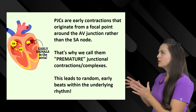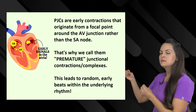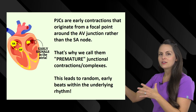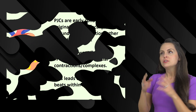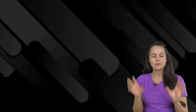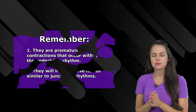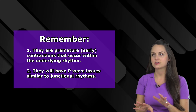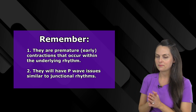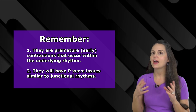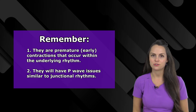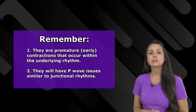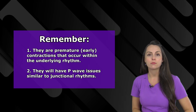Whenever they occur, they're going to cause these random beats to appear early within that underlying rhythm. Two big things to walk away with about PJCs: number one, they are premature early contractions that are just going to happen within that underlying rhythm. Secondly, it's going to have P wave issues, similar to those junctional rhythms we went over before.